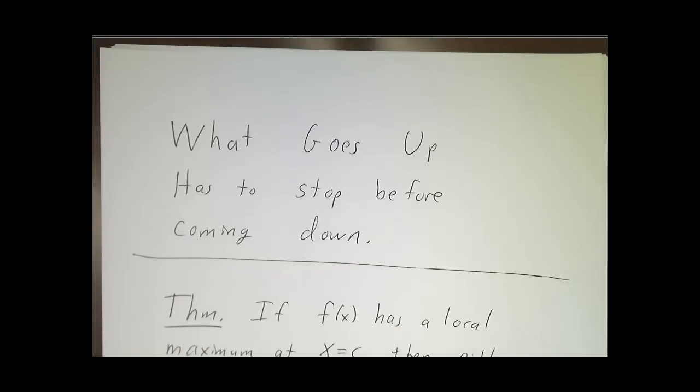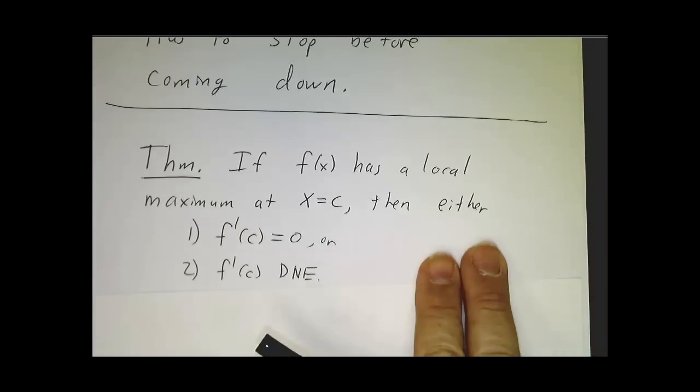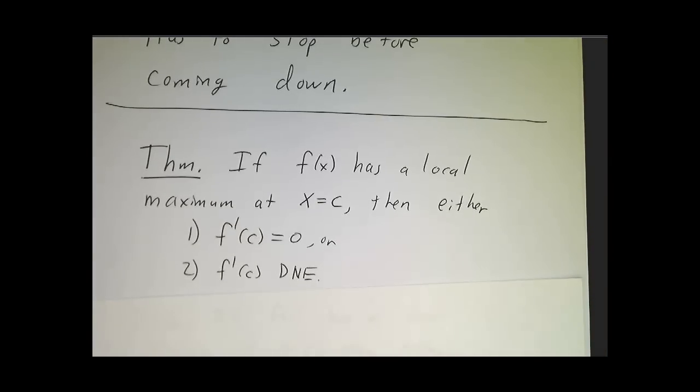So let's suppose we've got a function f of x, and it's got a local maximum at a spot x equals c. That's where it reaches the top of the arc. At that point, either the derivative is zero or the derivative doesn't exist.